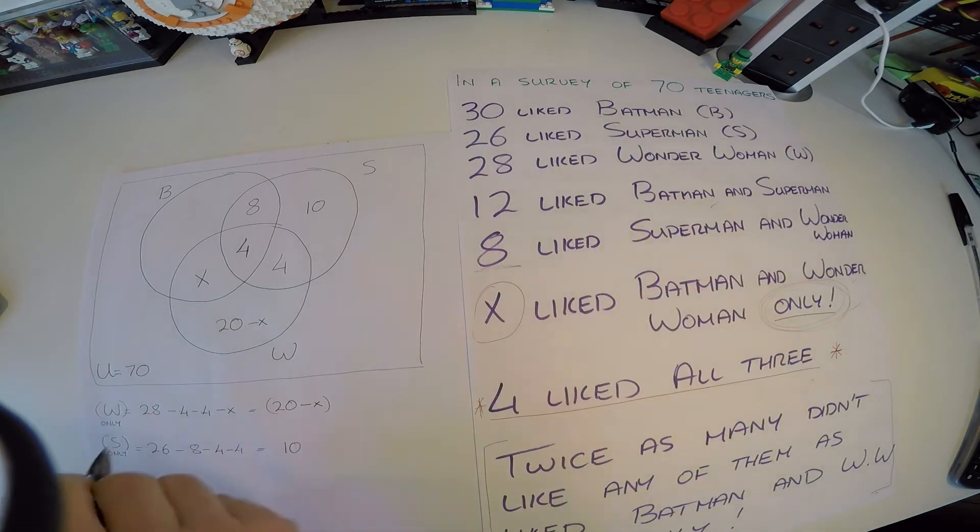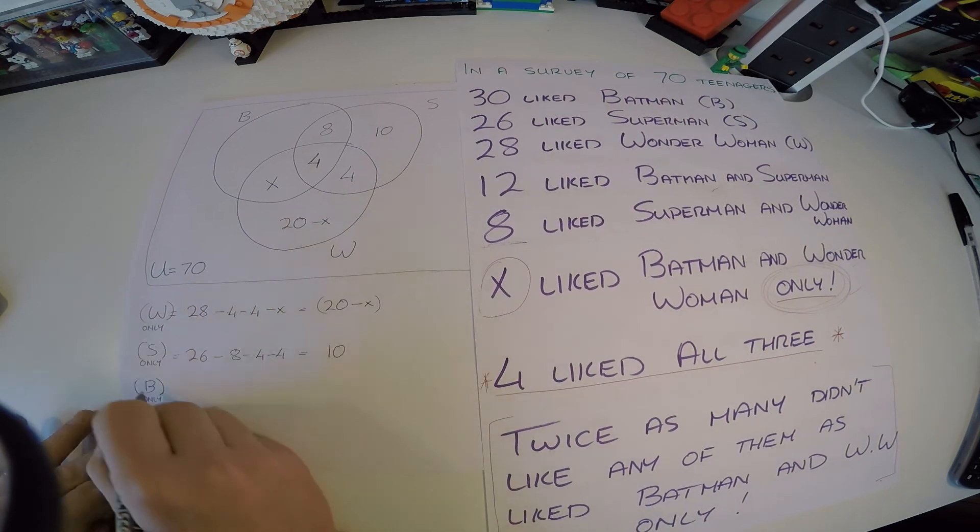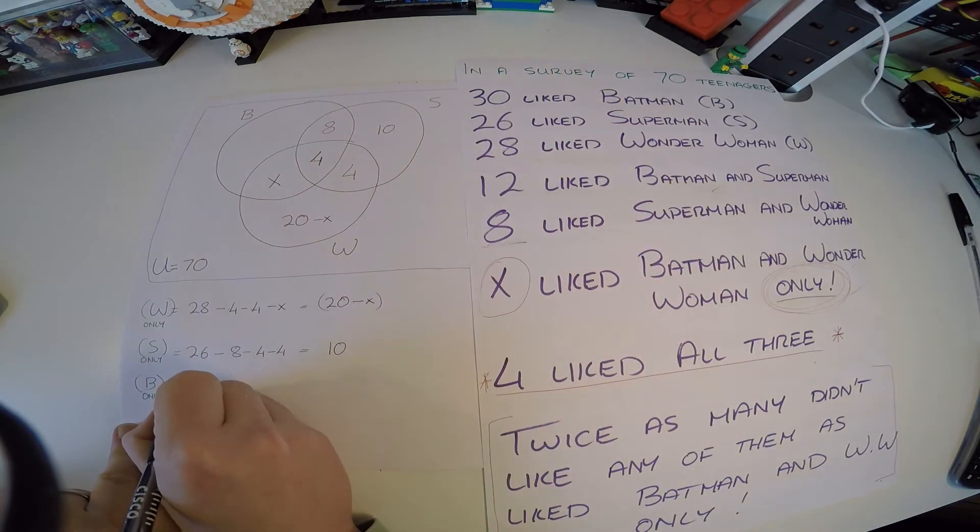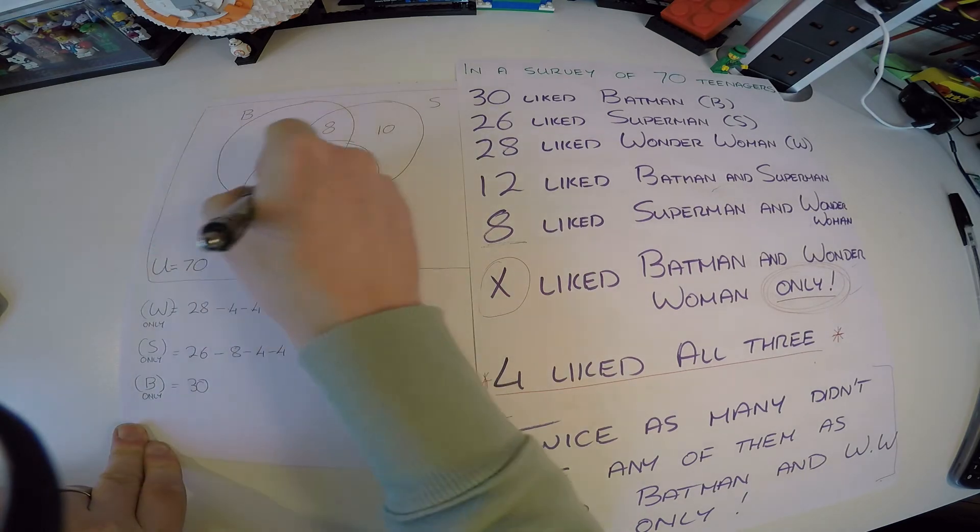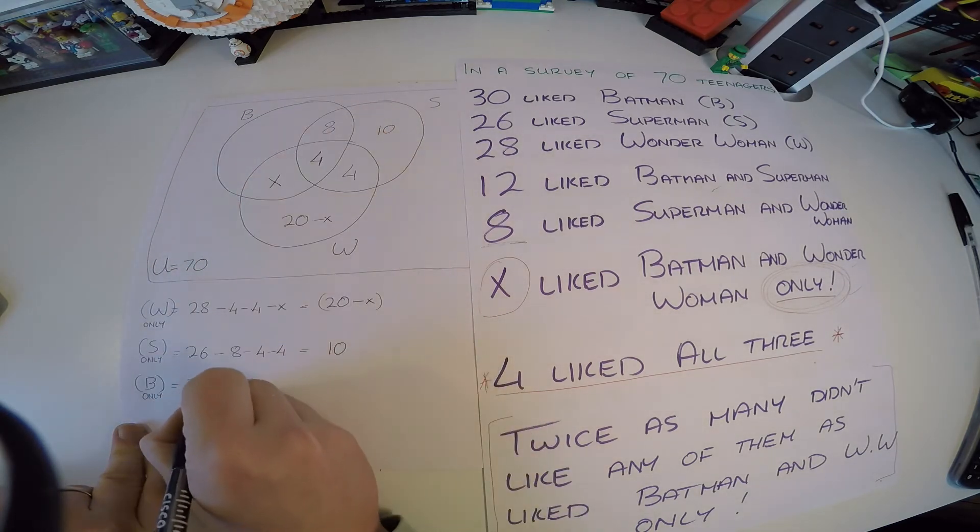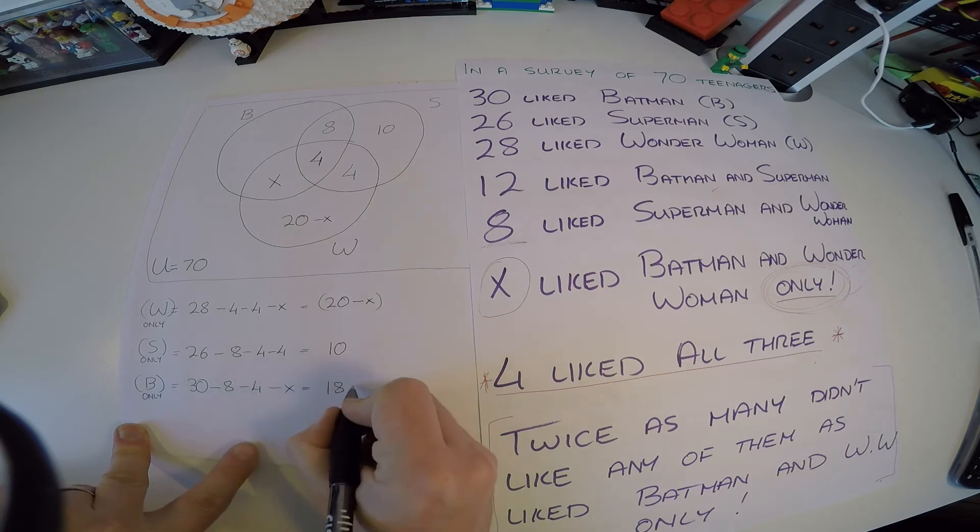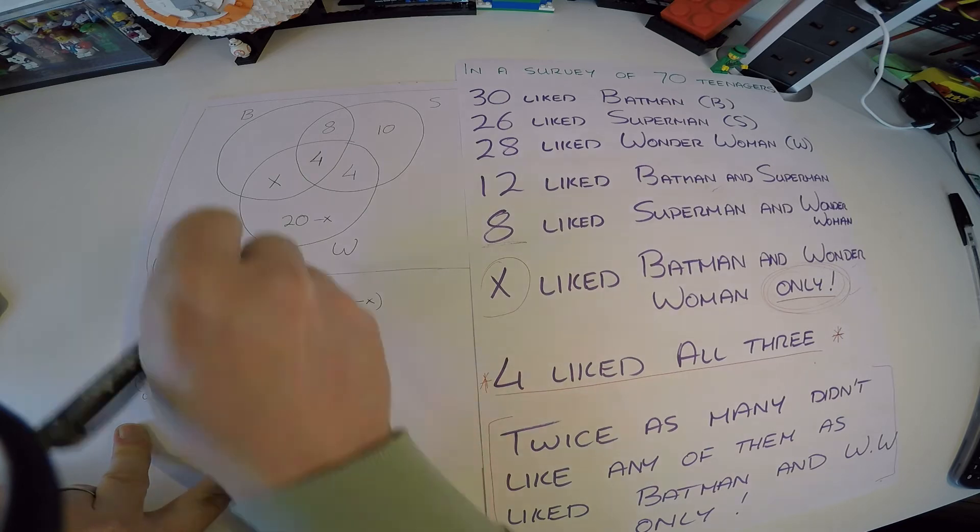Okay, so far so good. And 30 like Batman only. So let's take Batman only, this is not the notation you use, this notation I'm just using here for you to help you understand. So Batman only, well it says 30, so it's going to be 30 and we're going to subtract all the numbers we already have in the Batman section. So 30 minus 8 minus 4 minus x. That's 30 minus 8 is 22 minus 4 is 18, and then minus x, that's simply 18 minus x goes in here.